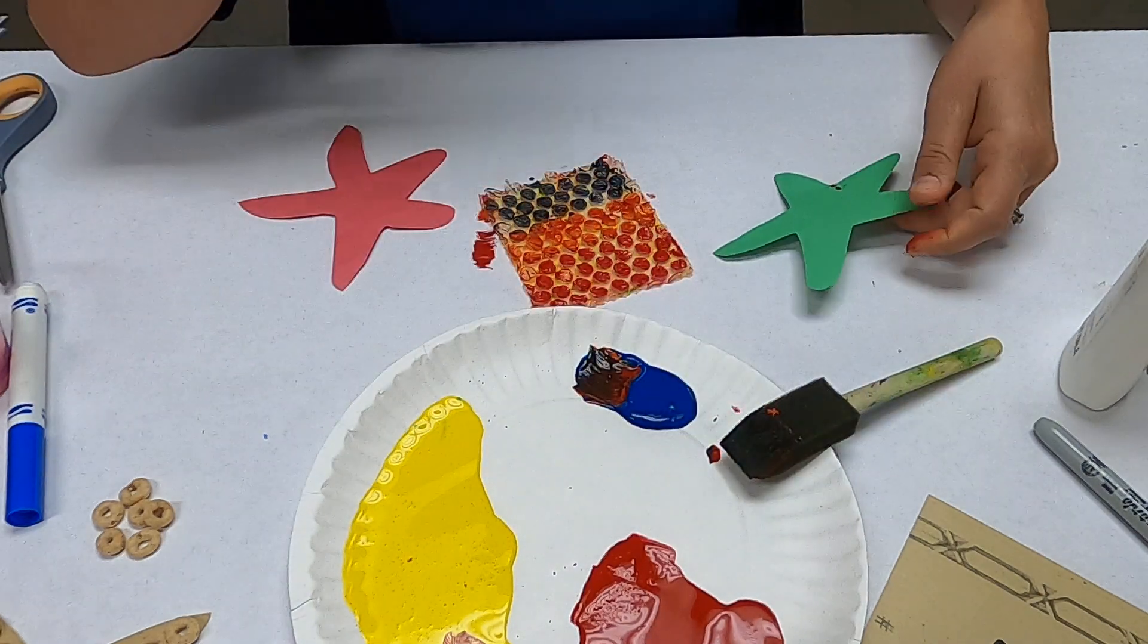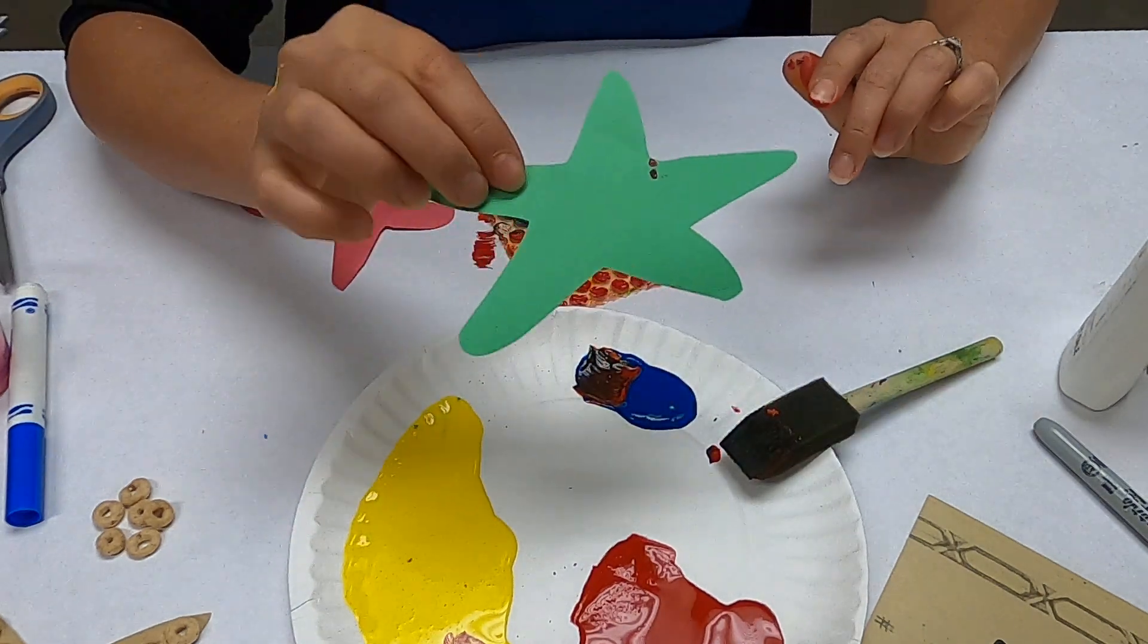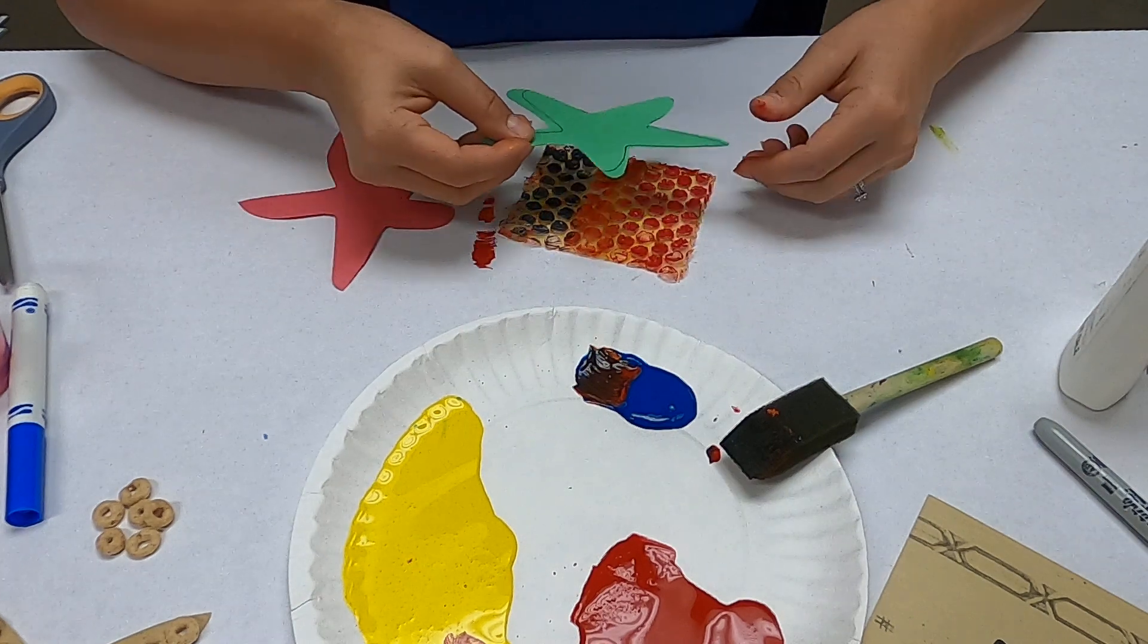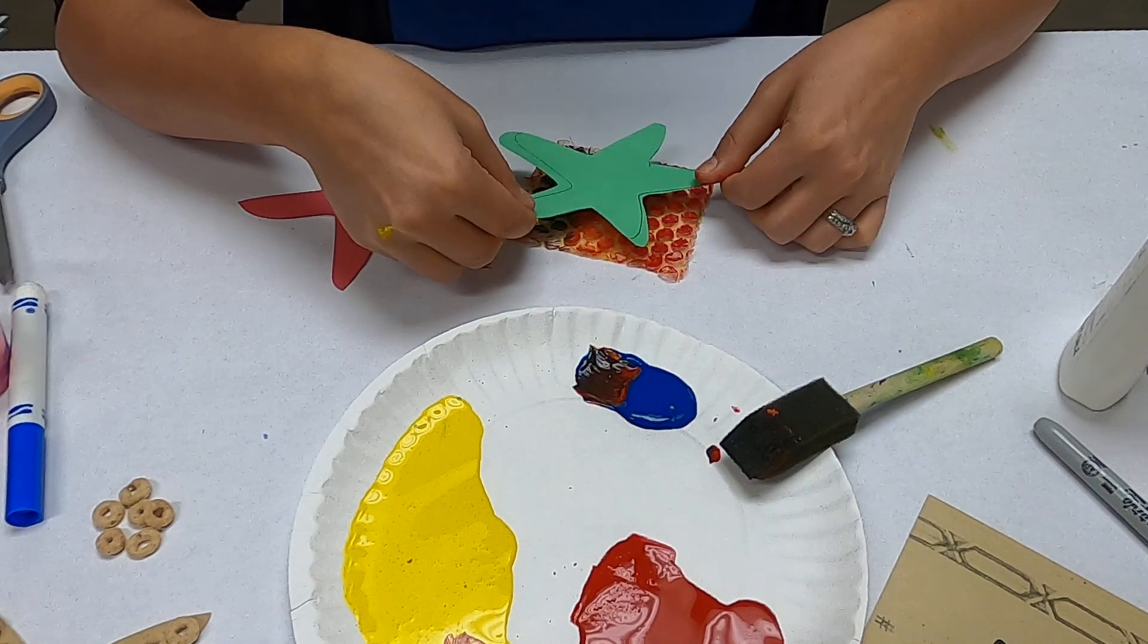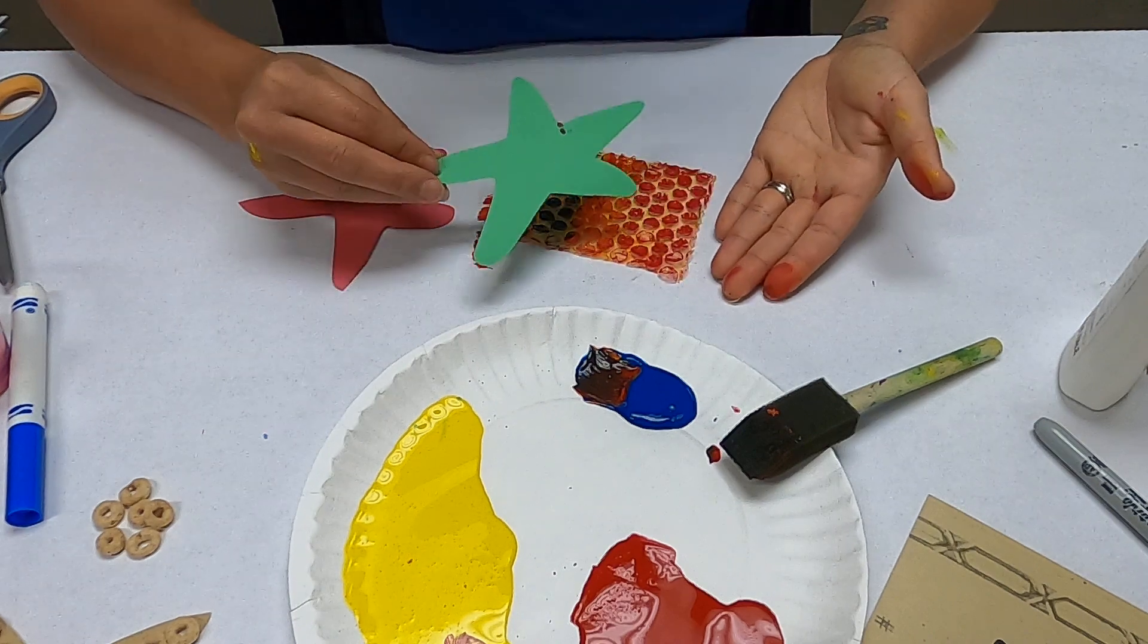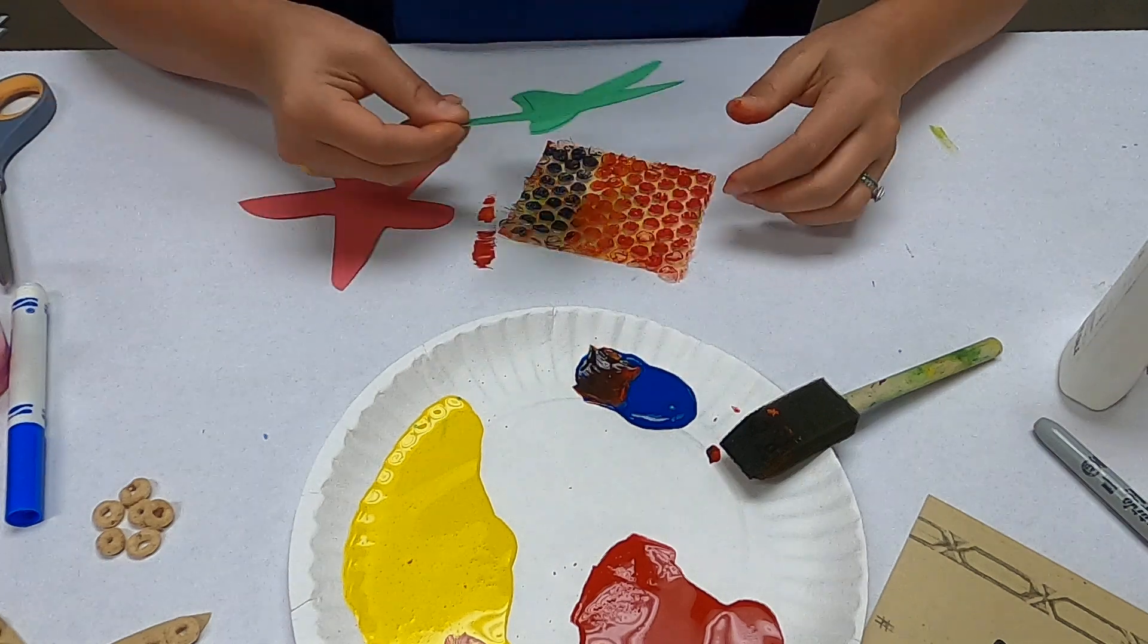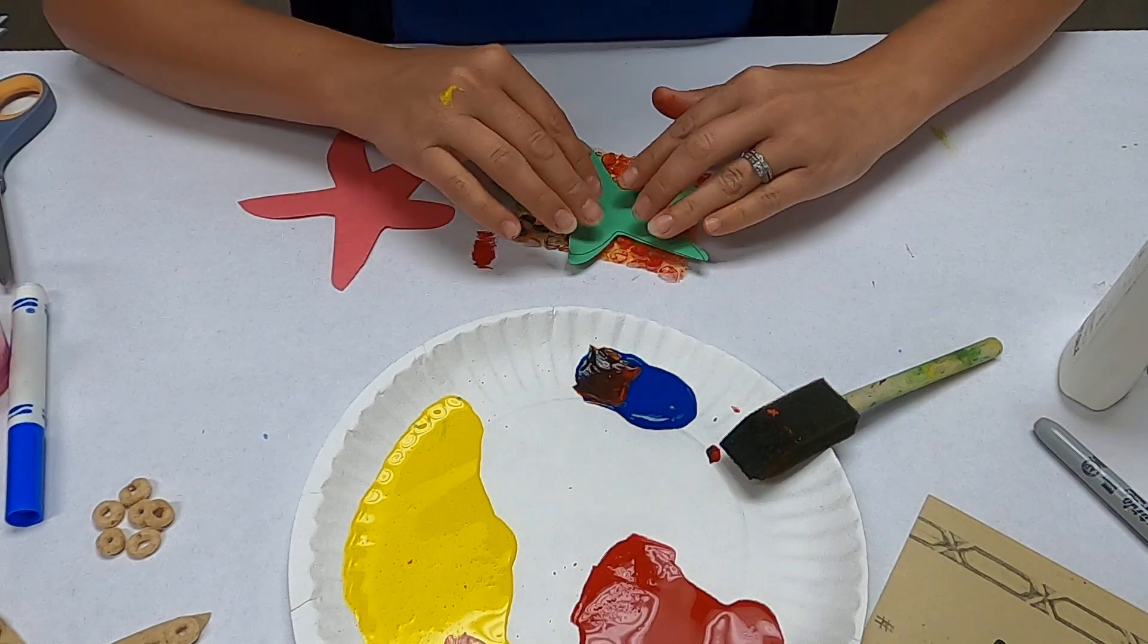Then you take your starfish and I'm actually gonna press it down like this on top of it. Or you can take your bubble wrap and put it on top of this. Just make sure that your area is clean and you've covered it with some newspaper or something so you don't get your table all dirty.